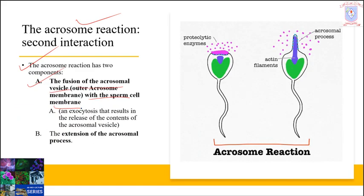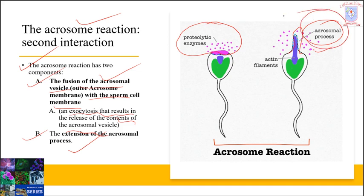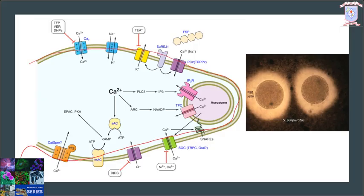As a result of the fusion of the acrosomal vesicle, the next step is the exocytosis — the release of the contents of the acrosomal vesicles. The second event during the acrosomal reaction is the extension of the acrosomal process: a bulging spike-like structure. So the first event is the release of proteolytic enzymes, and the second is acrosomal process formation.